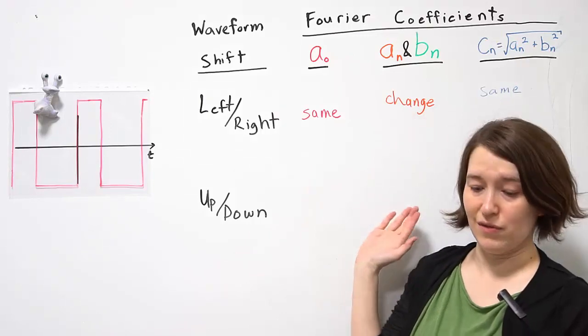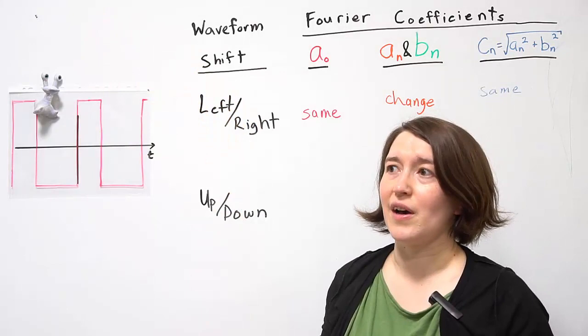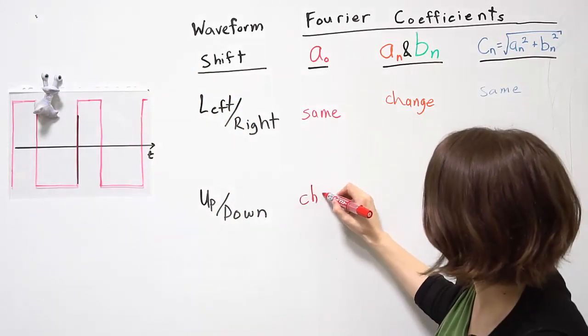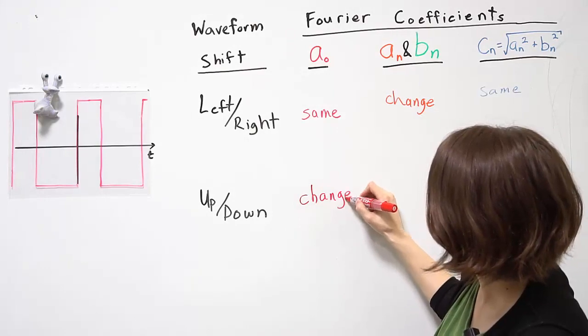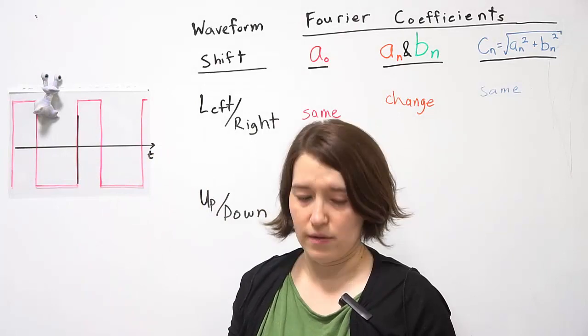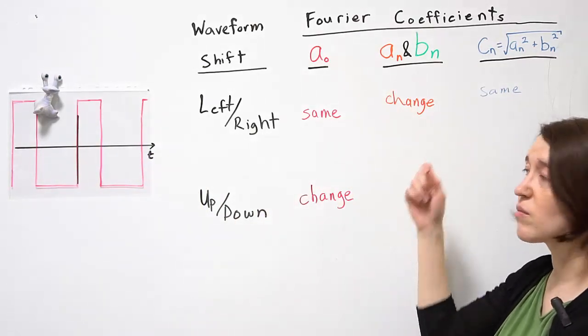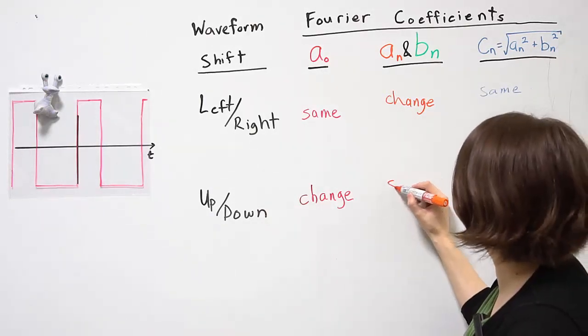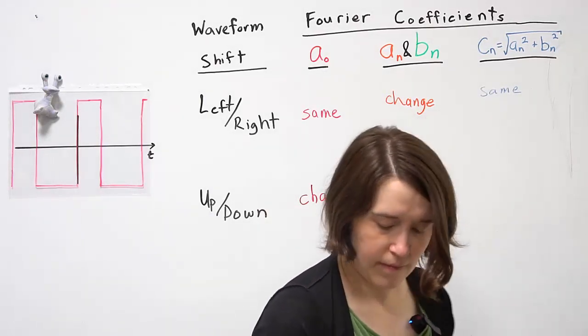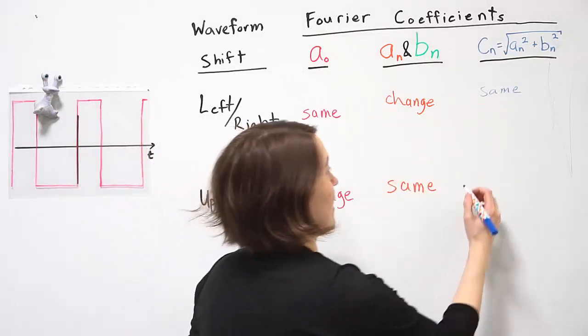How does it affect each of these? This time we've shifted the value, so the DC value definitely changed. But we haven't shifted right or left on the time domain, so the coefficients for the sine and cosine terms will be the same, actually. And directly following that, if a and b are exactly the same, then cN will also be exactly the same.